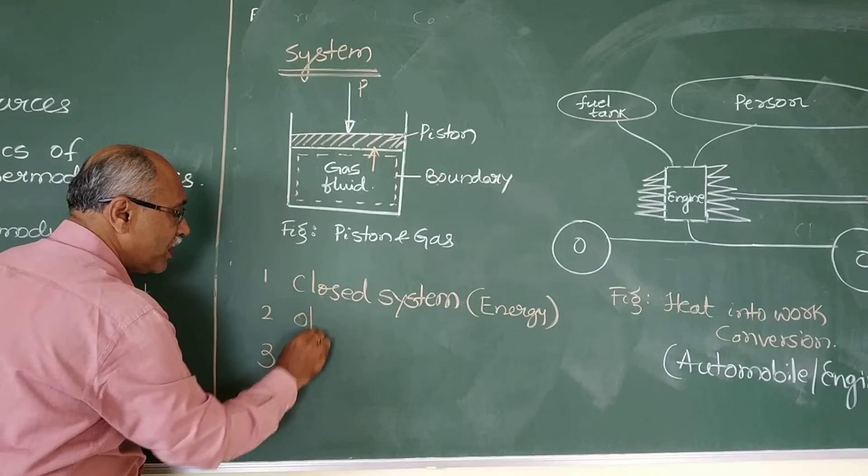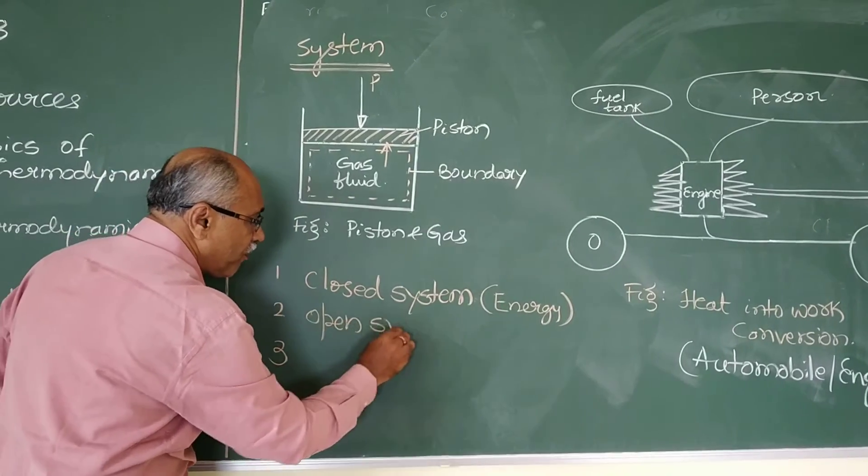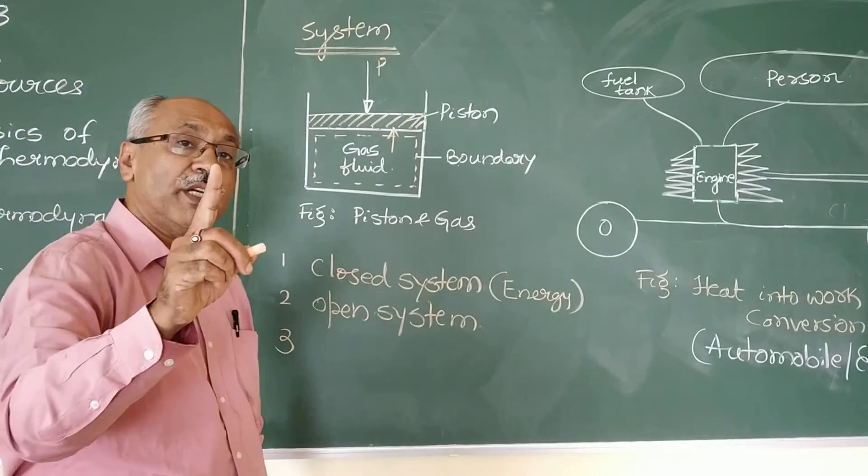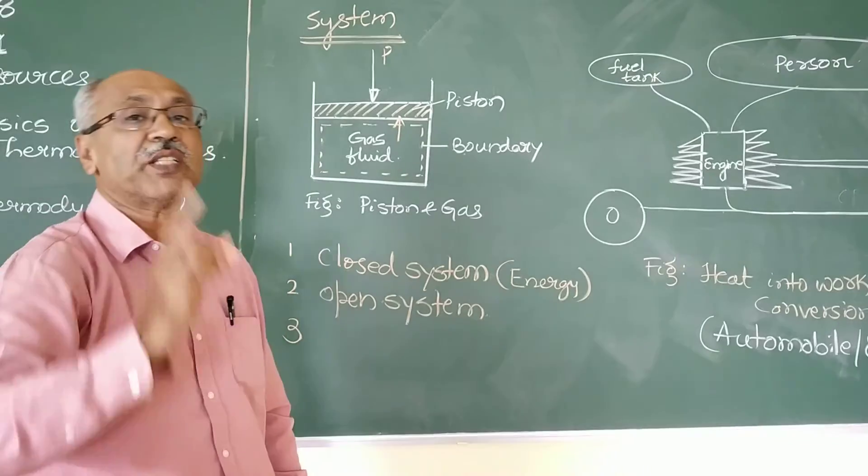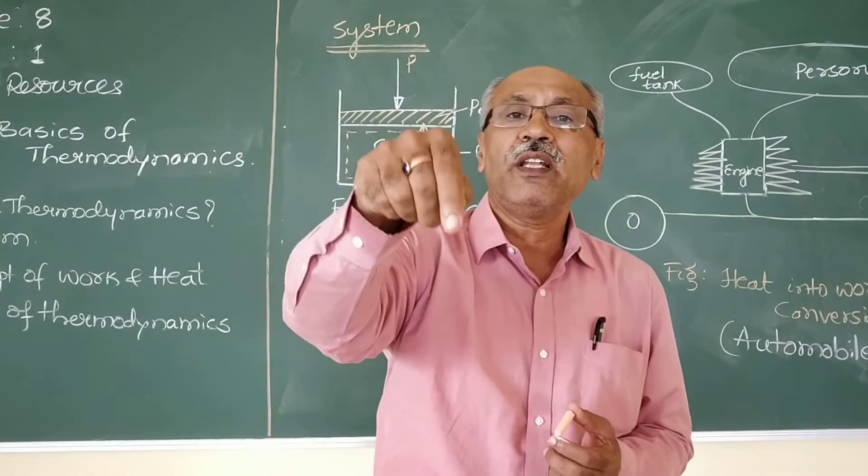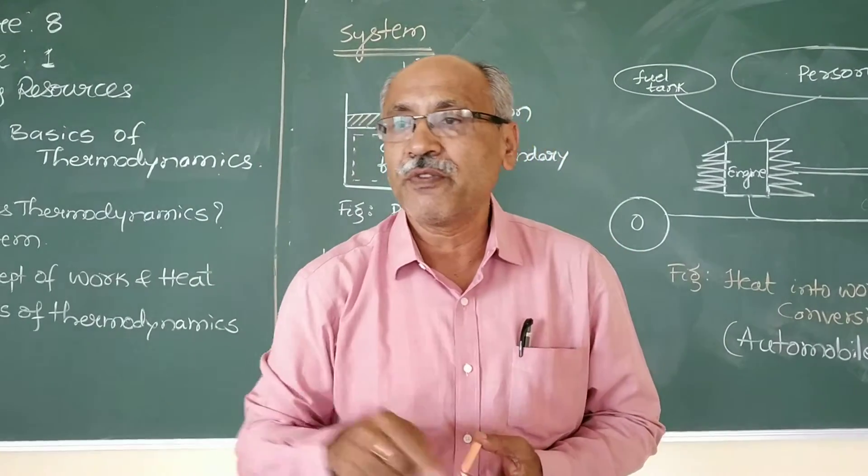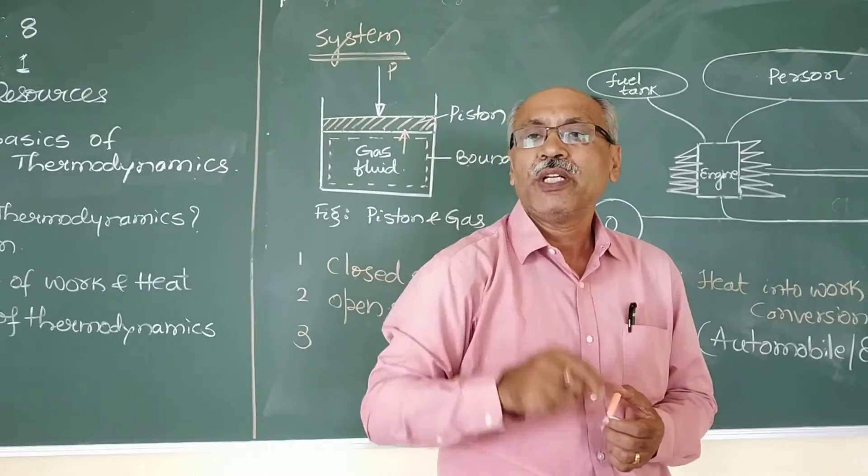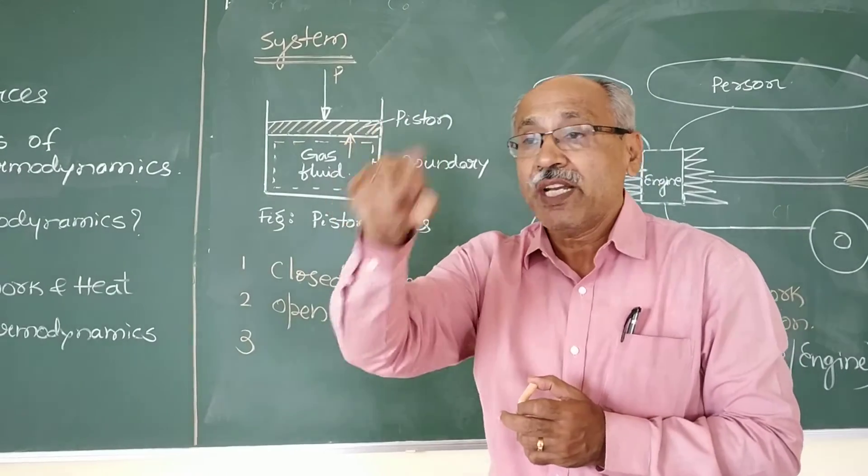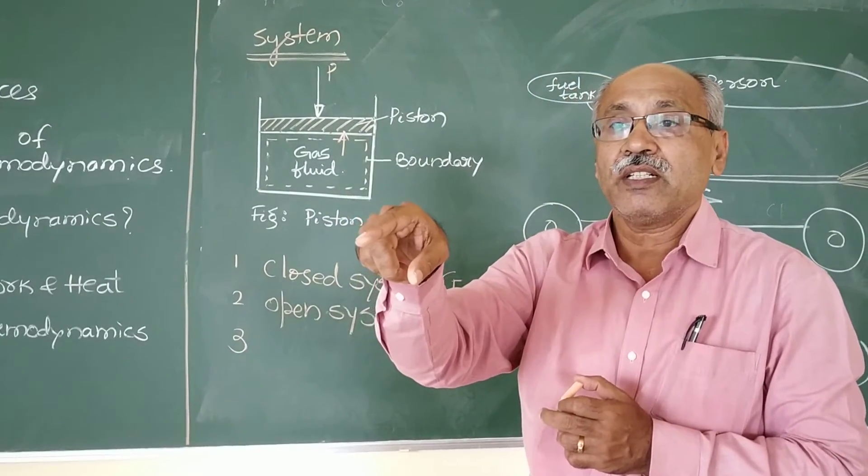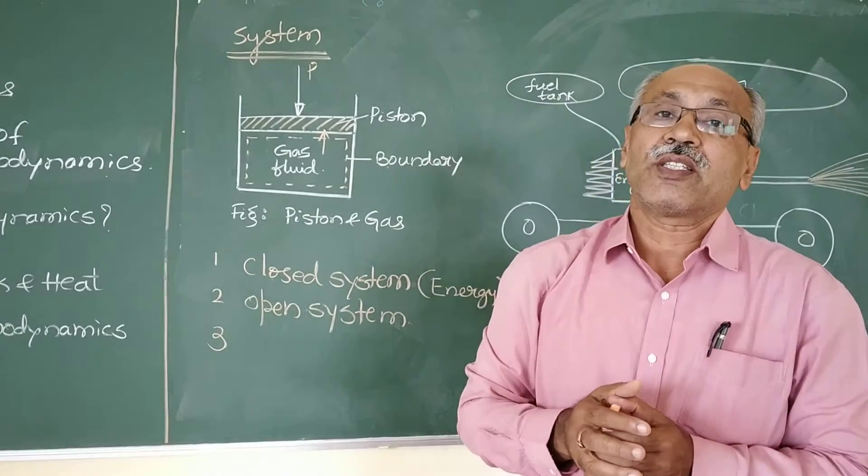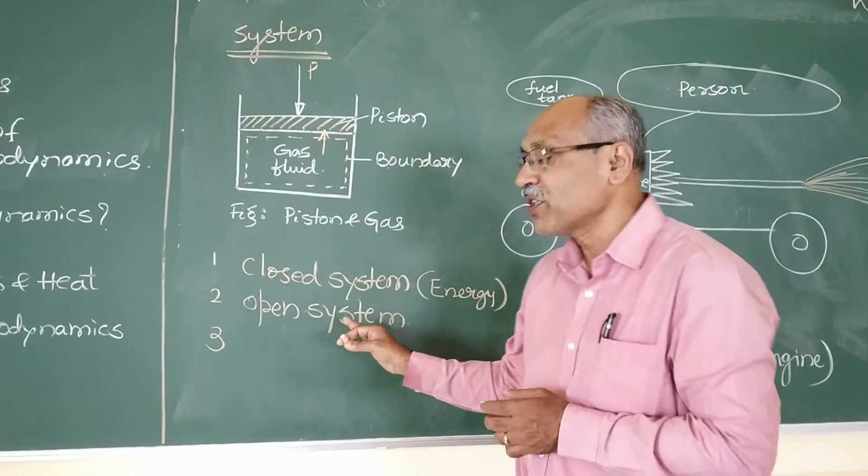Whereas the second type of system is open system. In this case, both energy as well as mass transfer takes place from the system. For example, an air compressor. When you want to refill the air into the tubes of your tires, of your bicycle or even a bike, when you go to workshop, you might have seen the air compressor, where the air is being compressed inside the cylinder, and air comes out of the cylinder with high pressure. Both energy as well as mass transfer takes place. That is called as open system.